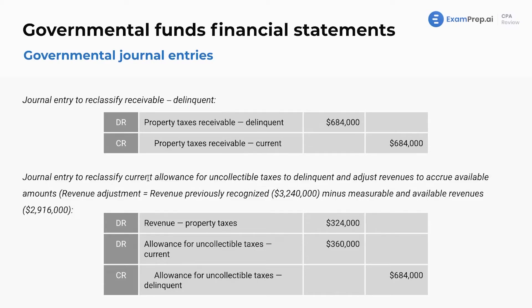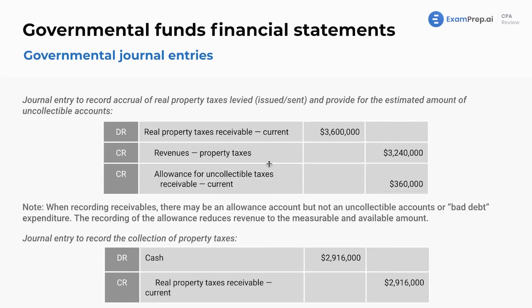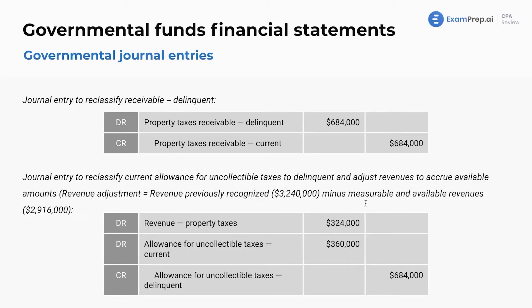Journal entry to reclassify current allowance for uncollectible taxes to delinquent and adjust revenues to accrue available amounts. Originally, the allowance for doubtful accounts is an estimate — we estimated that we are not going to collect $360,000. However, how much was really uncollectible? It was $684,000. So we're reducing revenue by that extra amount, and we are accounting for that original amount plus the additional amount for a total uncollectible of $684,000. Pretty similar to corporate accounting, but it's going well.